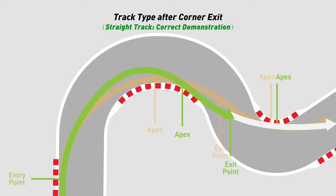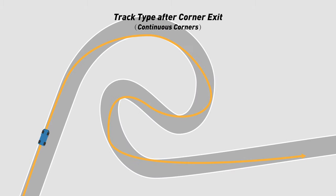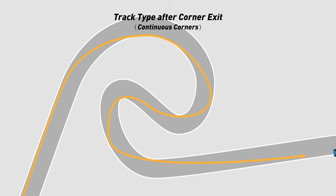By choosing this racing line, the car will have an earlier stage of throttle increase and will be in a better exit position for the next corner. The similar continuous corners are called combination corners, and this situation is more complicated. In the future, we will explain in the advanced tutorial the selection of racing lines and cornering techniques for combined corners.